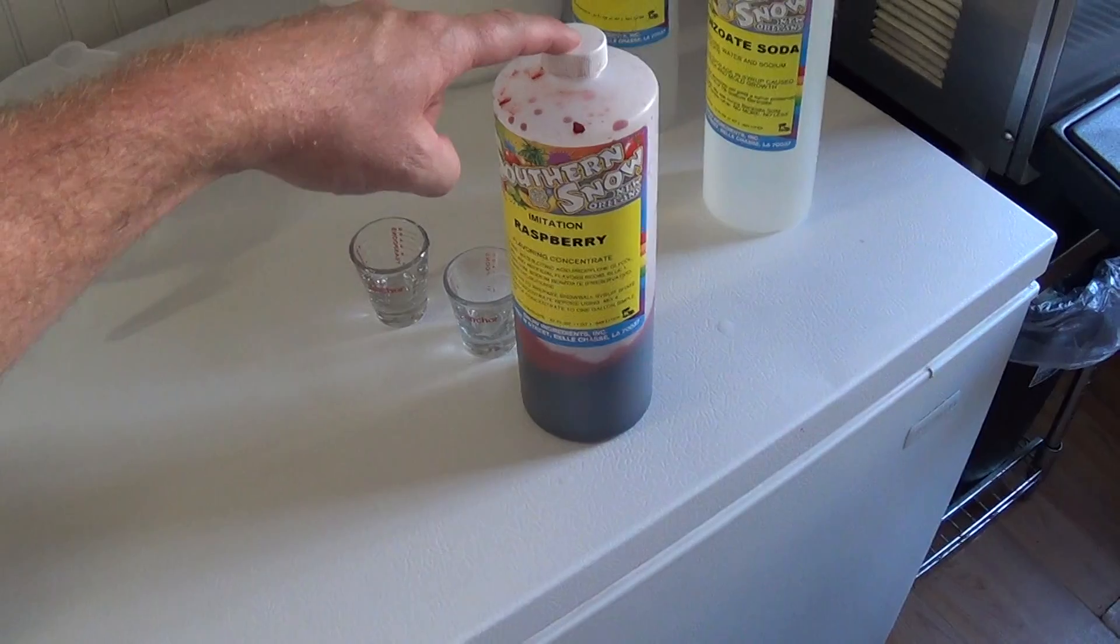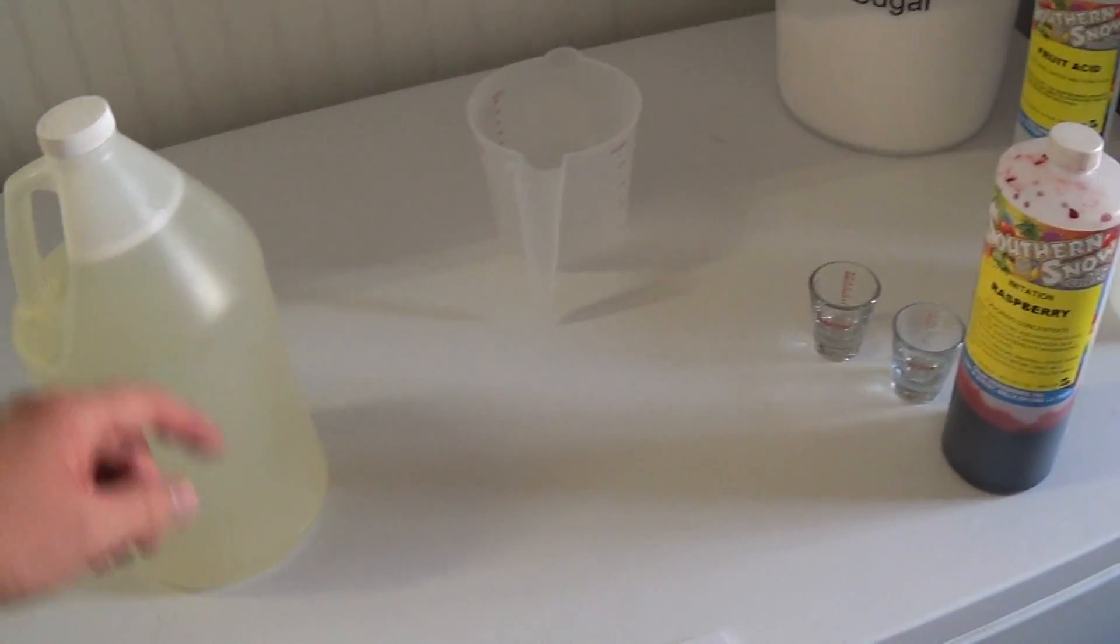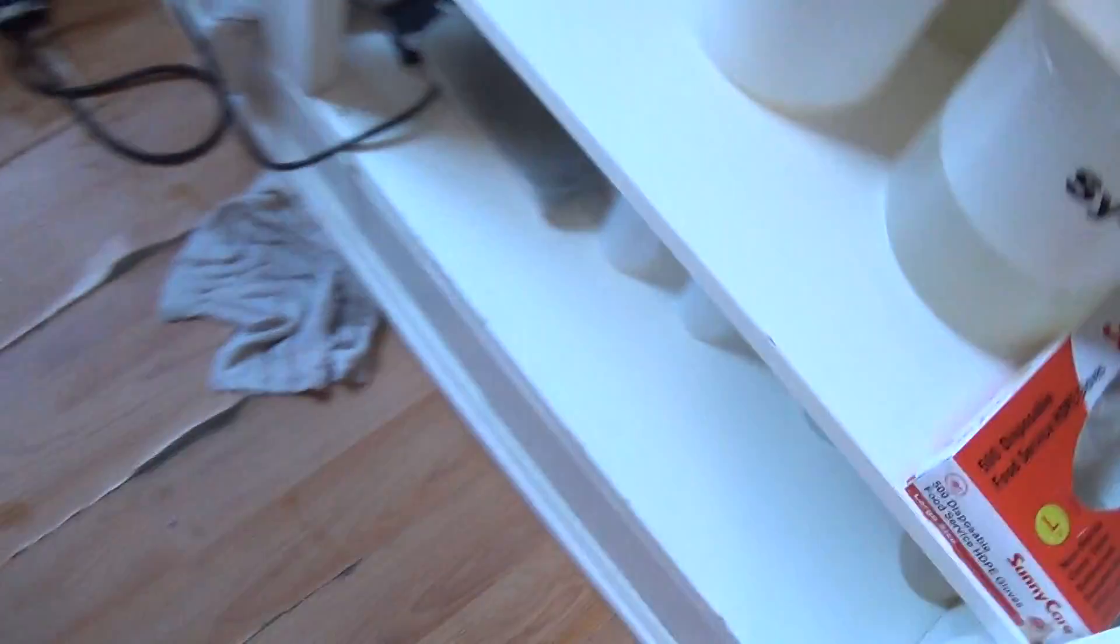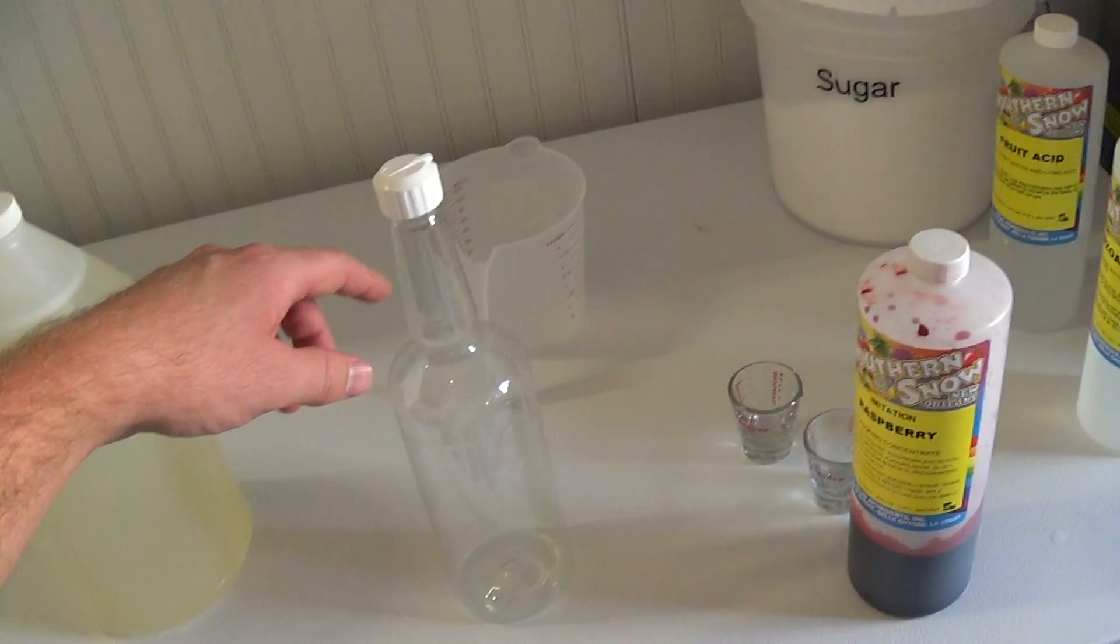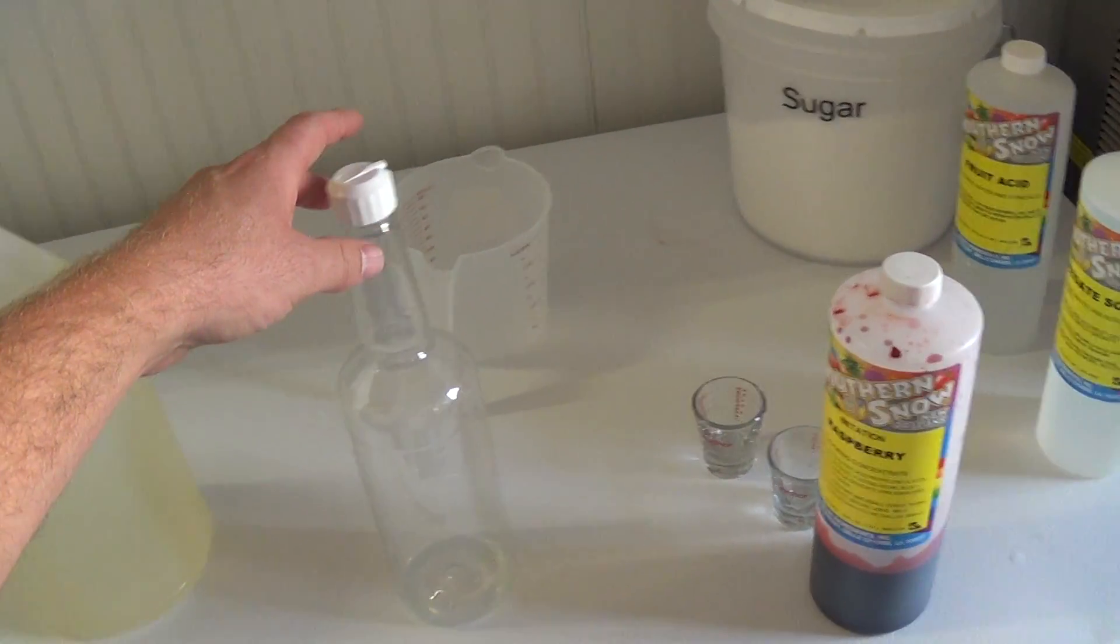So you take one ounce of concentrate and then you put it in a quart bottle like this, and then you fill the rest with simple syrup, then shake it, and then you're done. So it's pretty simple to make.